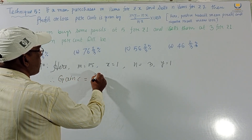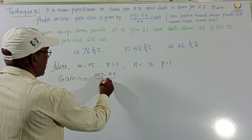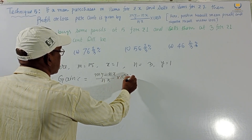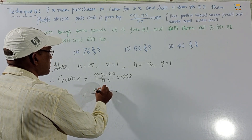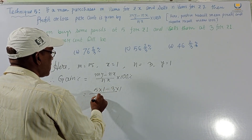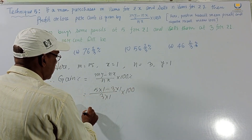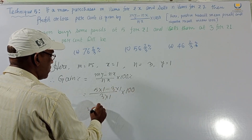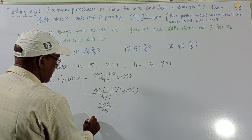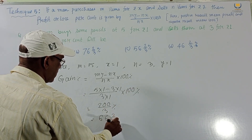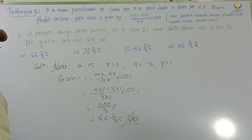Gain percent equals (my minus nx) by nx into 100 percent. Substituting: m is 5, y is 1, n is 3, x is 1. So (5×1 minus 3×1) by (3×1) into 100 equals 2 by 3 into 100, giving 200 by 3 percent, which equals 66 and 2/3 percent. This is our final answer. Very easy solution!